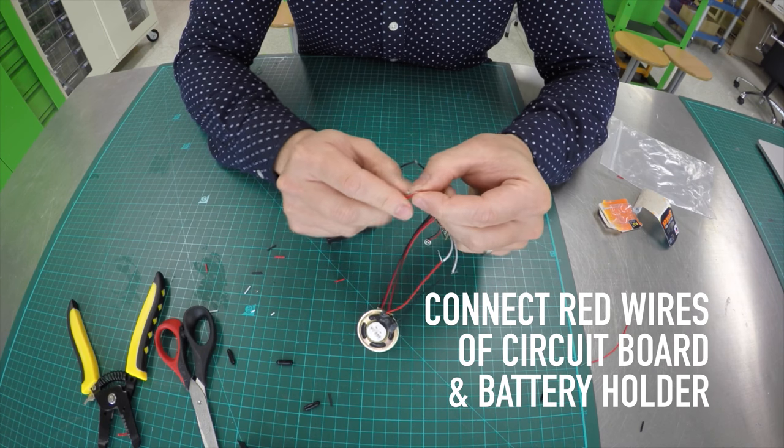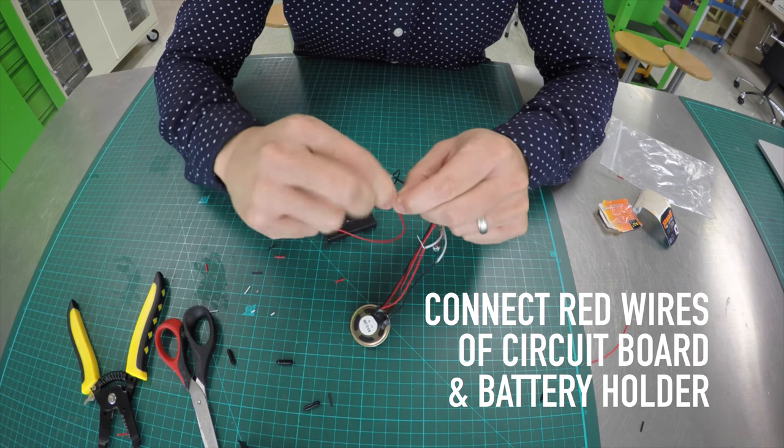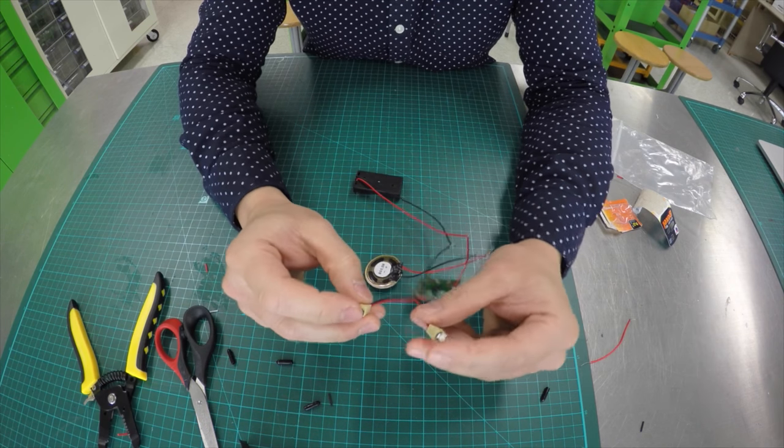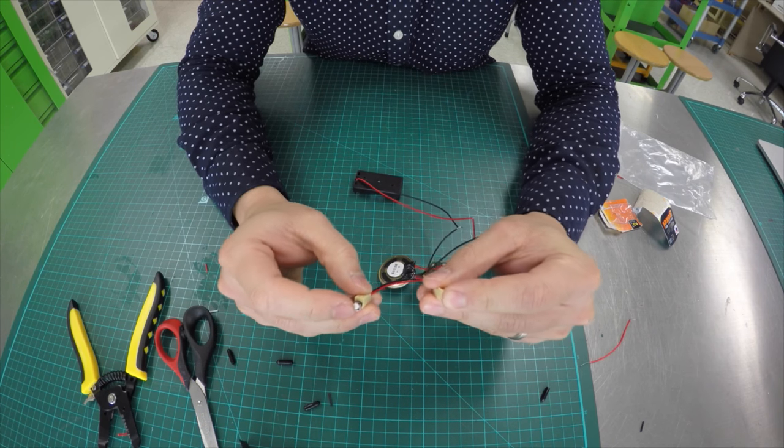Finally connect the red wire of the circuit board to the red wire of the battery holder. Go ahead and test out your circuit and troubleshoot any problems you might find.